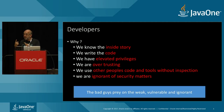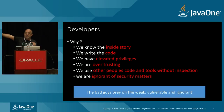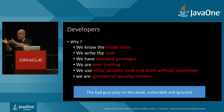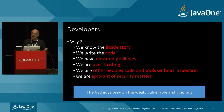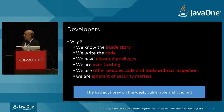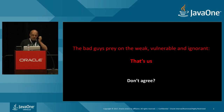If attackers can get changes inserted into open source, or find a vulnerability by looking at open source projects and then identify who's using that code, they can target those users directly. In general we use code, we use tools, we don't think about it. As it says: the bad guys prey on the weak, vulnerable, and ignorant — and that's us.